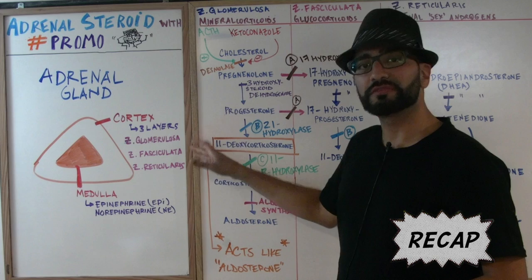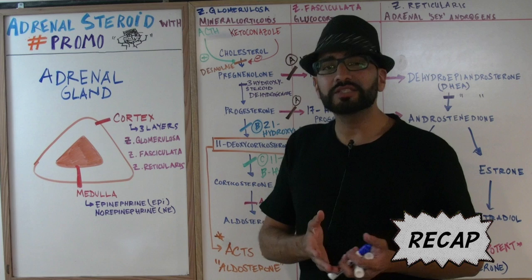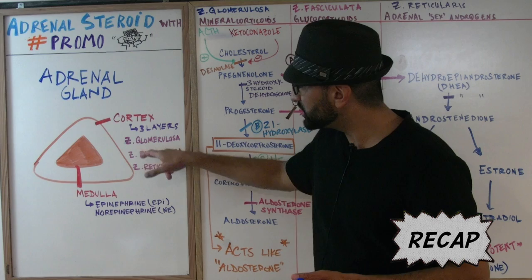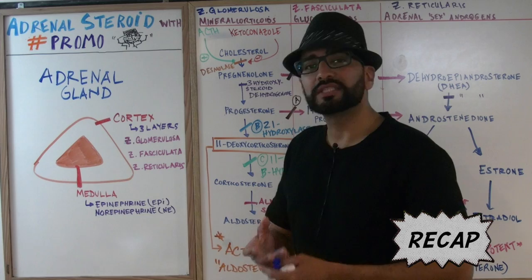How are you going to remember that? When we talk about the kidneys, we talk about GFR — the glomerular filtration rate — and the adrenal cortex layers share the same abbreviation: GFR. The inner core, the medulla, both produces and secretes epinephrine as well as norepinephrine — concepts we'll talk about in future lectures.